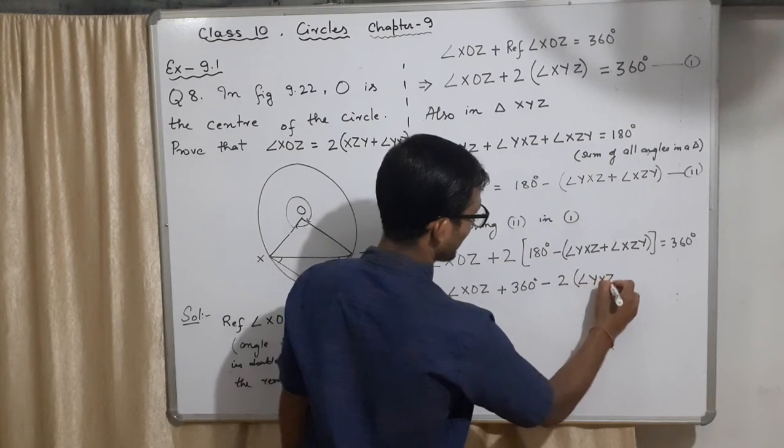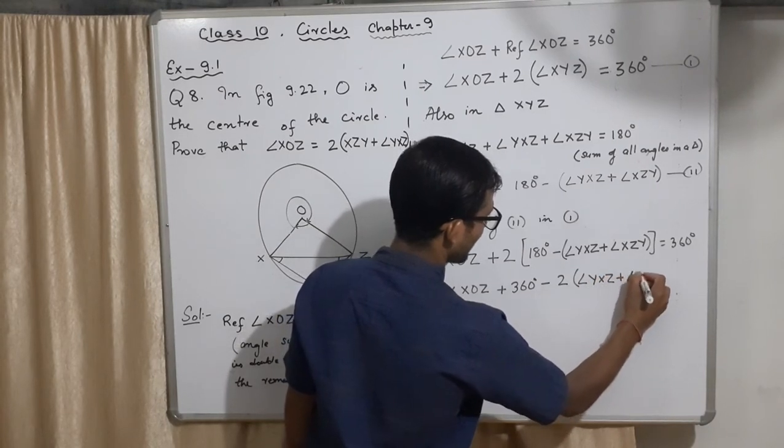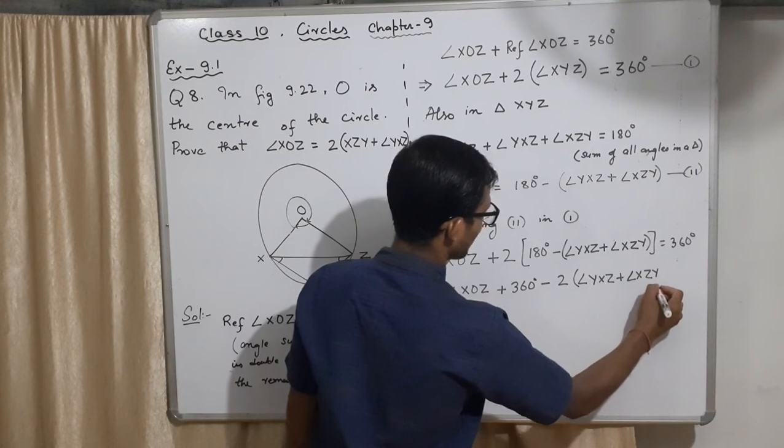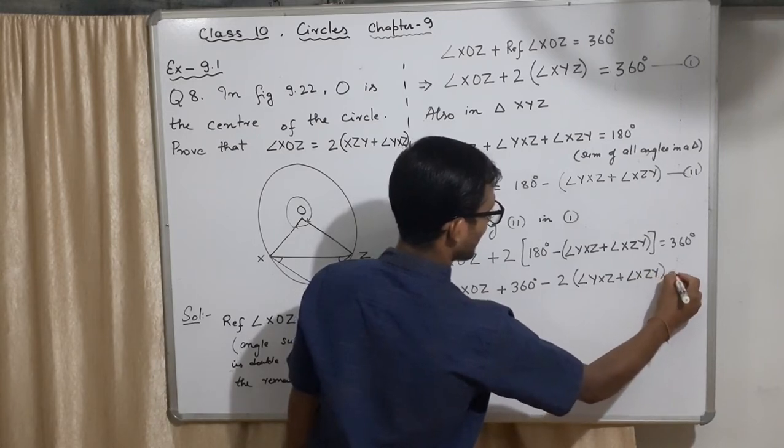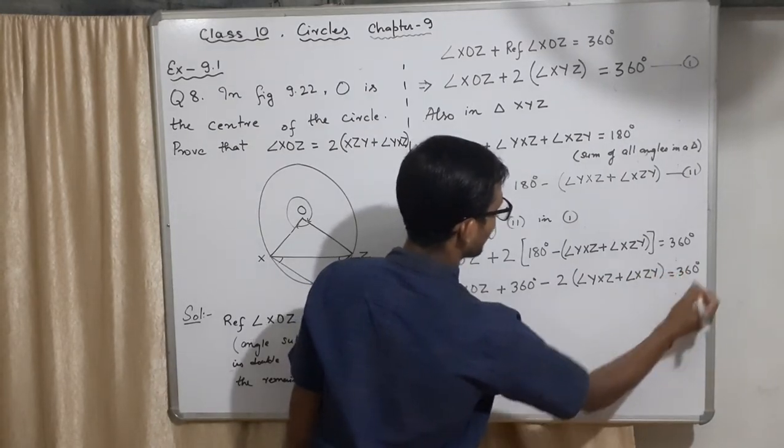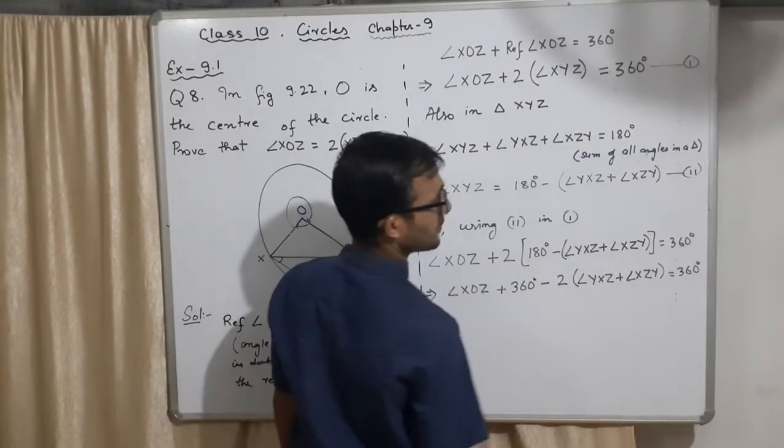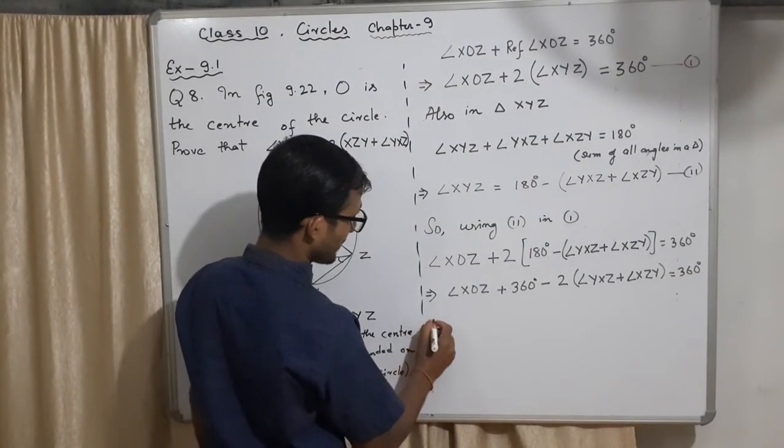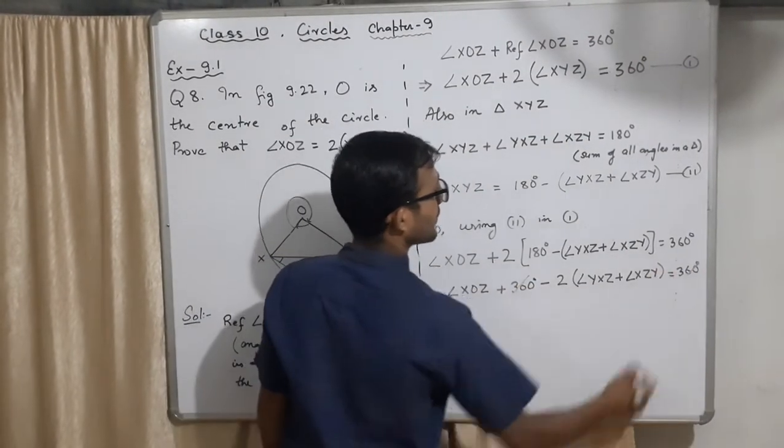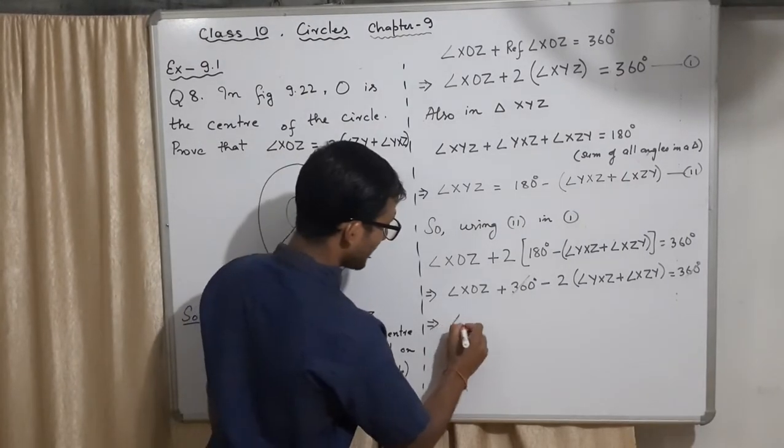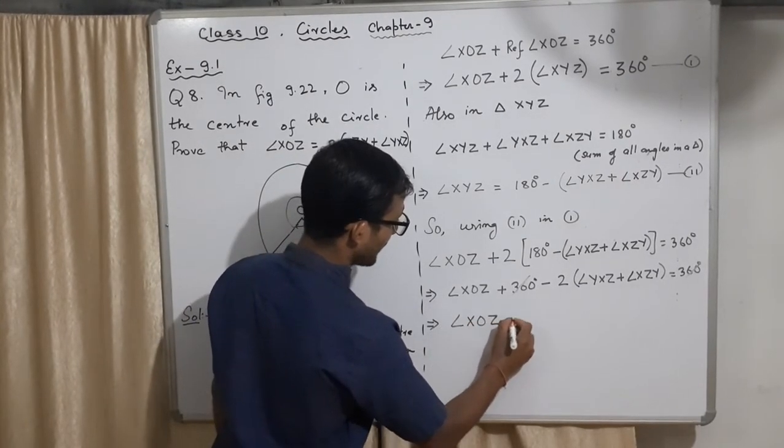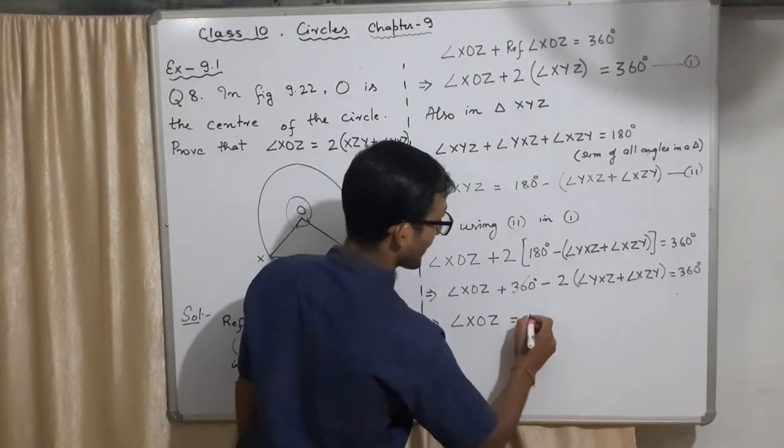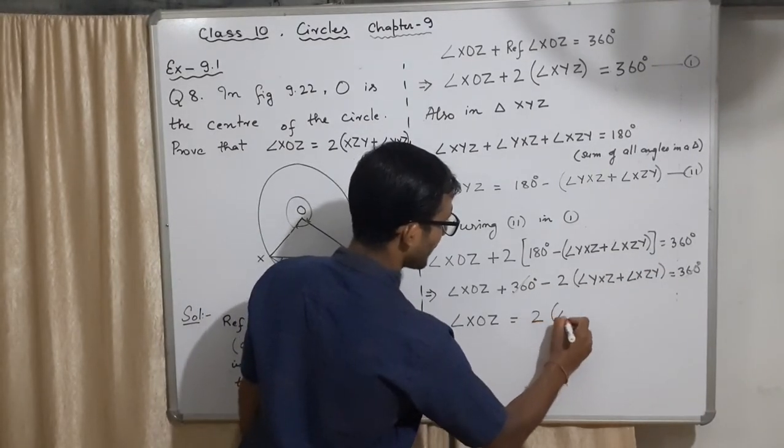∠XYZ plus 360 plus - both same sign, that will be subtracted. Subtracted from both sides. Now ∠XYZ will be equal to - this will go that side. Entire 2 angle...